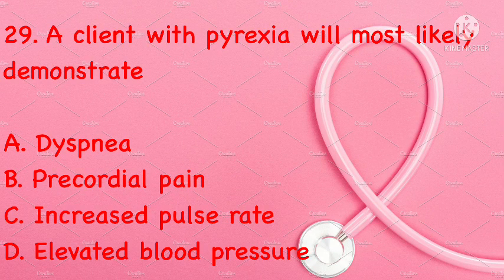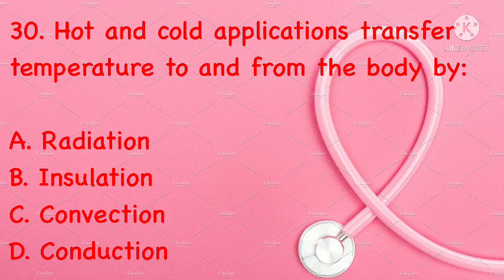A client with pyrexia will most likely demonstrate: dyspnea, precordial pain, increased pulse rate, or elevated blood pressure. Correct answer is C: increased pulse rate. Hot and cold applications transfer temperature to and from the body by: radiation, insulation, convection, or conduction. Correct answer is D: conduction.